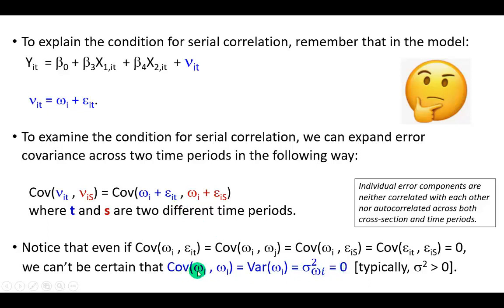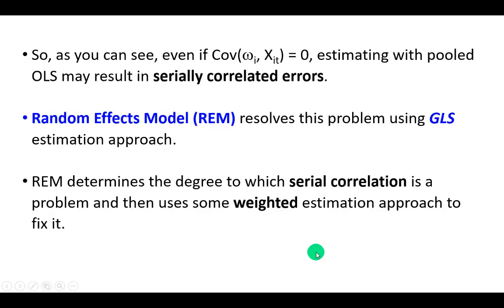Notice that covariance between a variable and itself is variance. And so we can't be sure that variance of the firm's specific error term is zero, which typically variance is positive. So as you can see, even if the covariance between the firm's specific error term and the regressor is zero, estimating with pooled OLS may result in serially correlated errors. The reason being that the variance of omega may be non-zero.